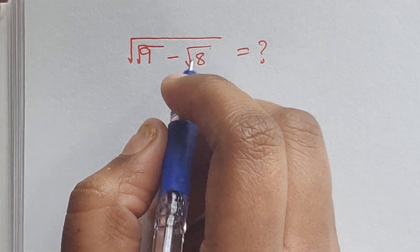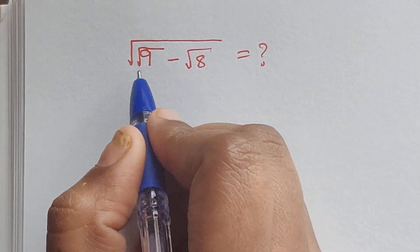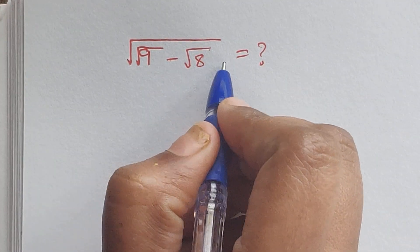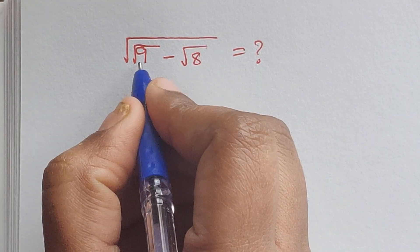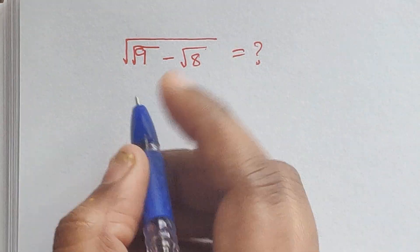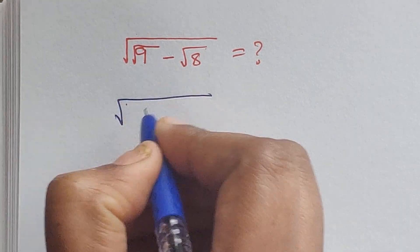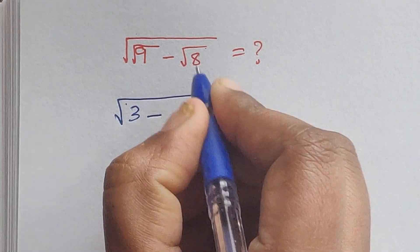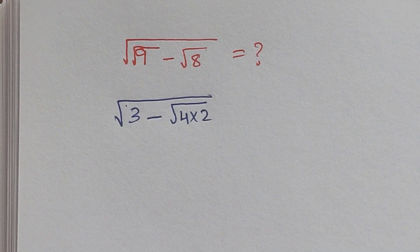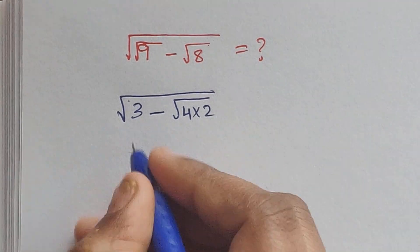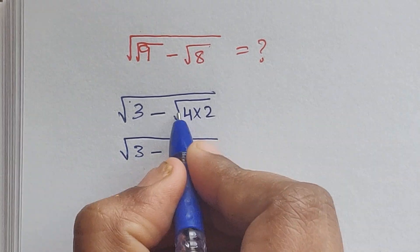Hello everyone, welcome back to our channel. Here we have one problem: square root of (square root of 9 minus square root of 8). So how do we solve this? We know that square root of 9 is 3, so we have square root of (3 minus square root of 8). Square root of 8 can be written as square root of 4 times 2.